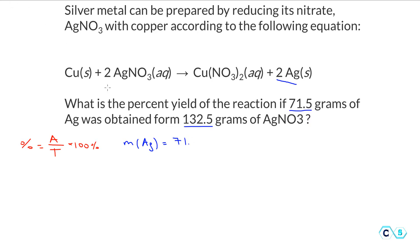We need to find the theoretical yield because this is what we don't know. The theoretical yield is the amount of product formed based on our calculation — in theory, in an ideal world, how much product we can get. To do this, we need to start from our reactant, silver nitrate, and determine the moles of silver nitrate, because we need moles for any stoichiometry calculation.